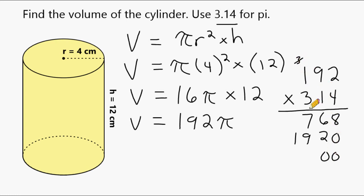And 3 times 2 is 6. 3 times 9 is 27. And 3 times 1 is 3 plus 2 more is 5.